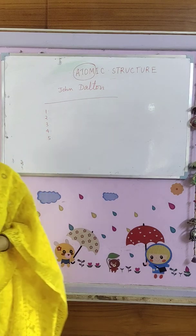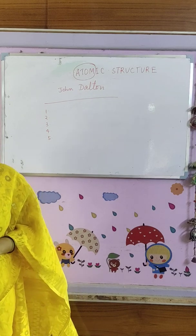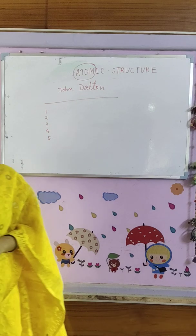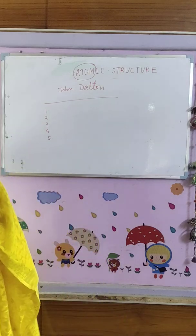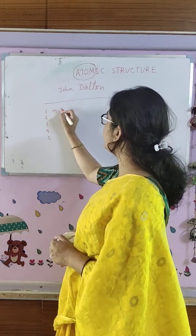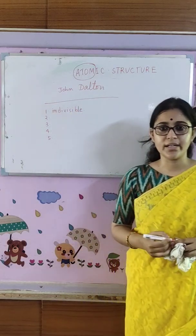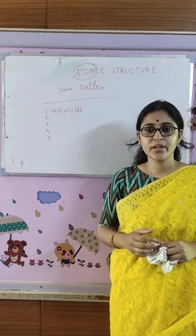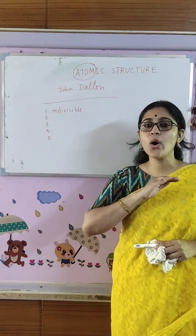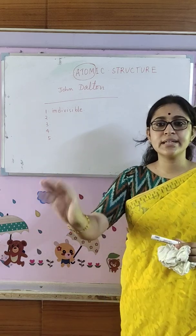John Dalton studied about atom and he told five characteristic properties of atoms. Number one, he told: atom is the smallest indivisible particle. The key term in this point is indivisible — atom cannot be divided further. Atom is the smallest particle and it cannot be divided further into smaller particles. So the first point is that atom is indivisible.